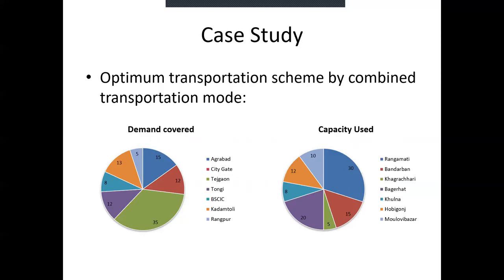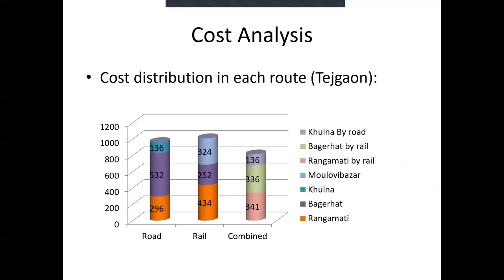Apparently, the road and the combined transportation model seem similar in these results — so why the hassle? This is answered in the next section called cost analysis. If we take the example of destination Tejgao, you can see the difference in the shipping cost. There is both road and rail route available for this destination. But if we use the road route for Khulna and rail route for Bagherat and Rangamati, the overall transportation cost becomes lower than either the pure road or the pure rail route model individually.